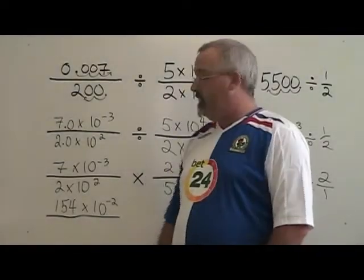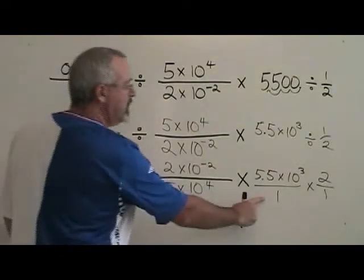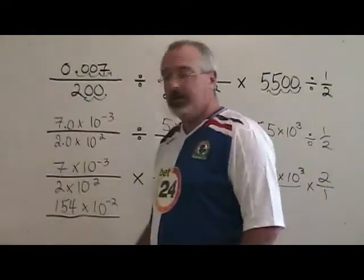Now for our denominator. The constant terms are 2 times 5 times 1 times 1. That multiplies to give us 10.